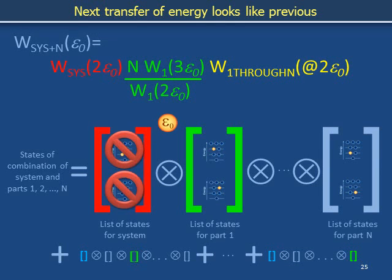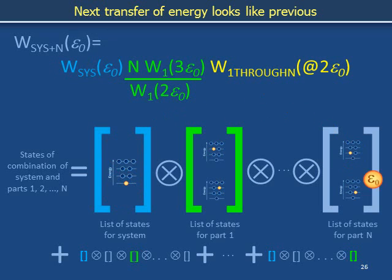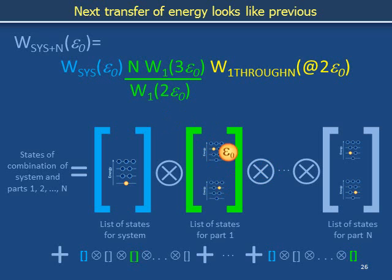What would happen to the number of configurations if we transferred yet another unit of energy out of the system and into, say, part n, or part n-1, or an intermediate part? We are dumping a unit of energy into parts of the bath that started out with 2ε₀ units of energy. This is physically the same as the procedure we studied when we previously dropped the system's energy from 3ε₀ to 2ε₀. But if we try putting the extra unit into part 1 — part 1 already has 3 units of energy, not 2. Dunking the basketball of energy into part 1 is not like dunking it into a part with energy 2ε₀.